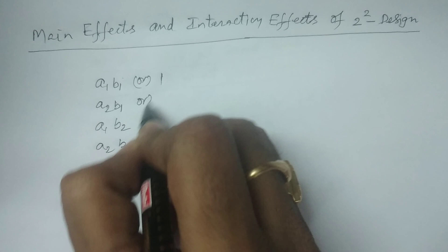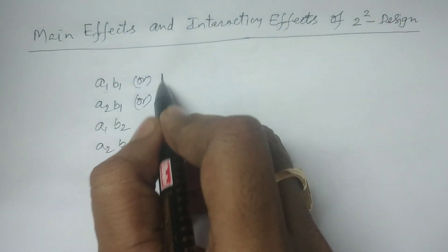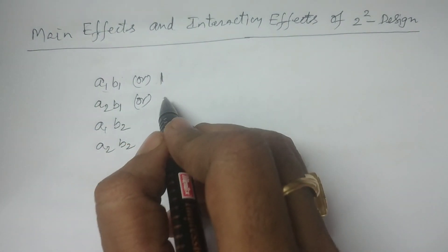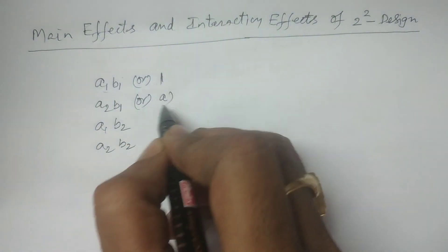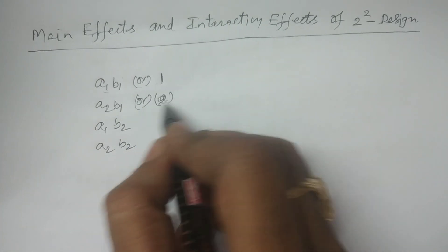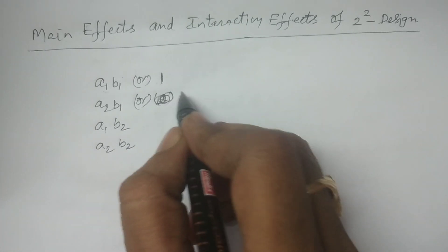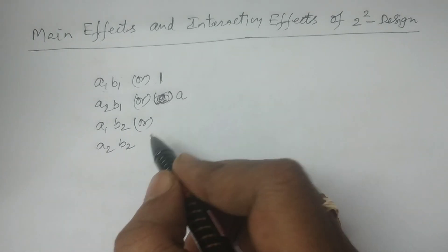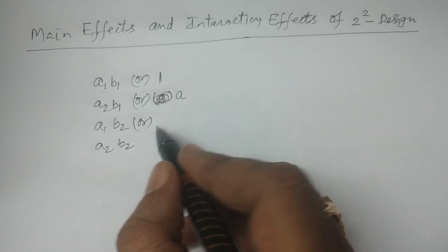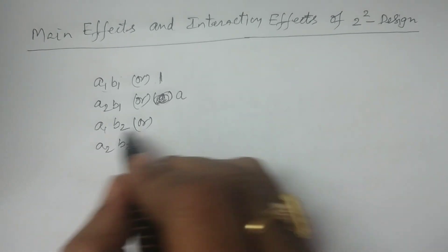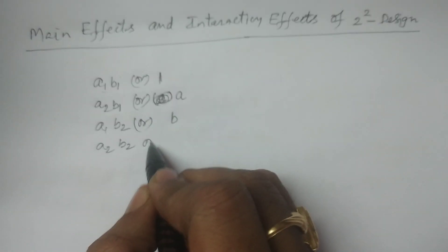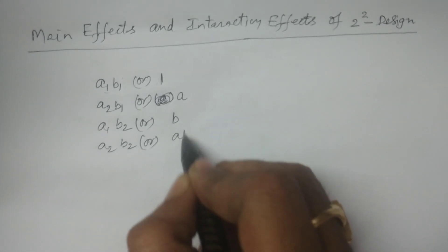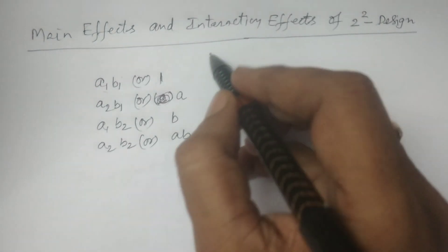You need first level only, so A2B1 — that is second level only — is indicated as 'a'. Then bracket notation is used to indicate combinations. For A1B2, we use 'b'. Then A2B2 is indicated as 'ab'.